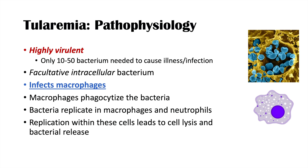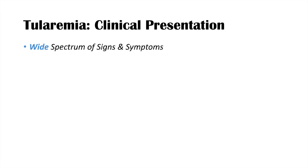Through continued replication, the bacteria essentially lead to lysis of the cell — the cell dies and ruptures — allowing the bacteria to spread outside and infect other macrophages and neutrophils.